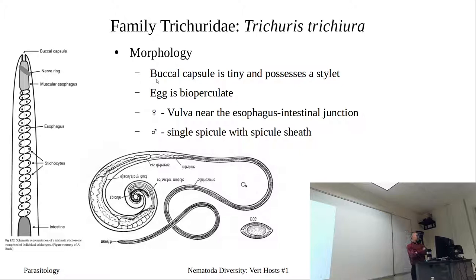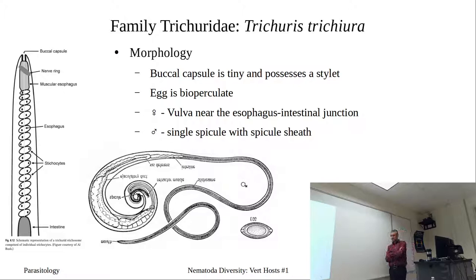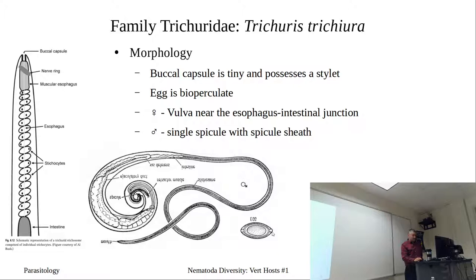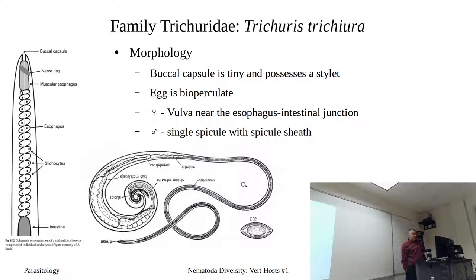The buccal capsule is tiny but it contains a stylet, likely used for penetration of host tissue. Our eggs are biperculate — you've got the egg with opercular plugs on both ends. On light microscopy these refract light so you'll actually see them — they look like plugs. With females, the vulva is located near the esophageal-intestinal junction. For the male, we have a single spicule and a spicule sheath. The spicule is pretty prominent in the male worm.